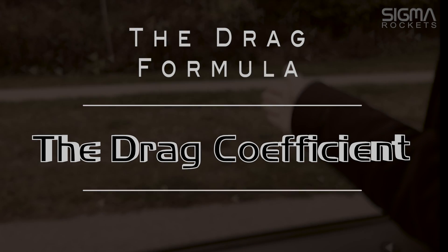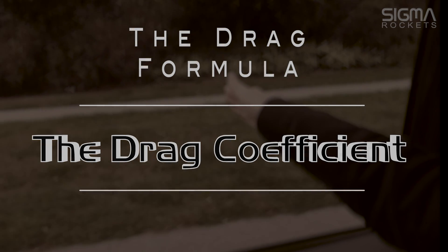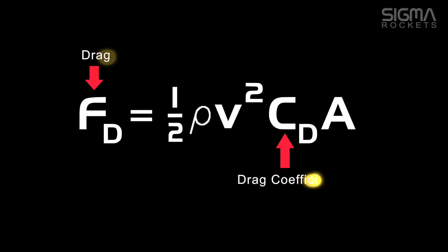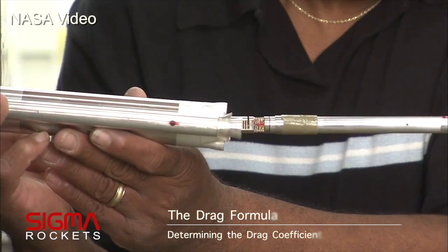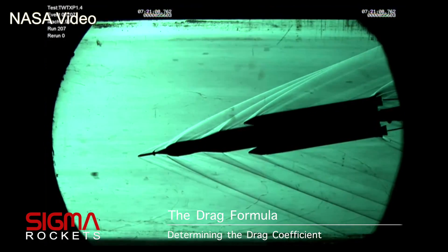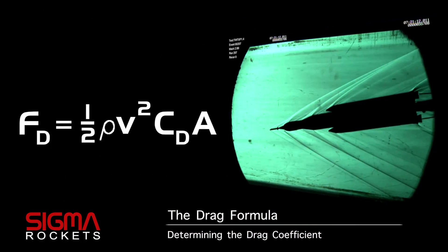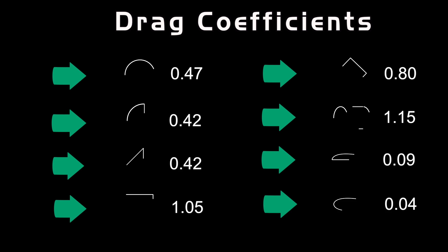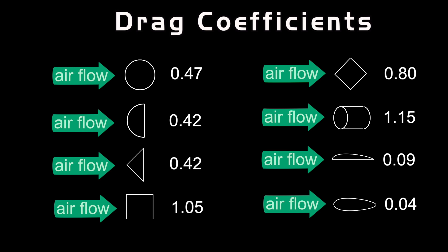The drag coefficient is a dimensionless value that is used to quantify the drag or resistance of an object. It is used to model the complex dependencies that shape has on drag, and is represented by the symbol C sub D in the equation. Drag coefficient is determined using a controlled environment such as a wind tunnel. The drag formula is then transposed in order to determine the drag coefficient.